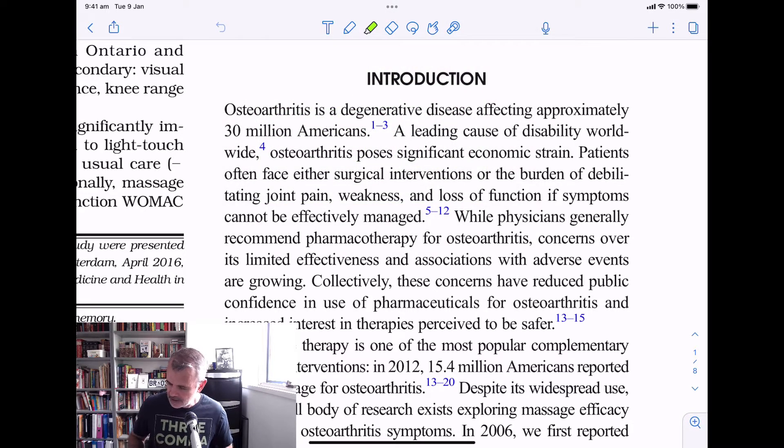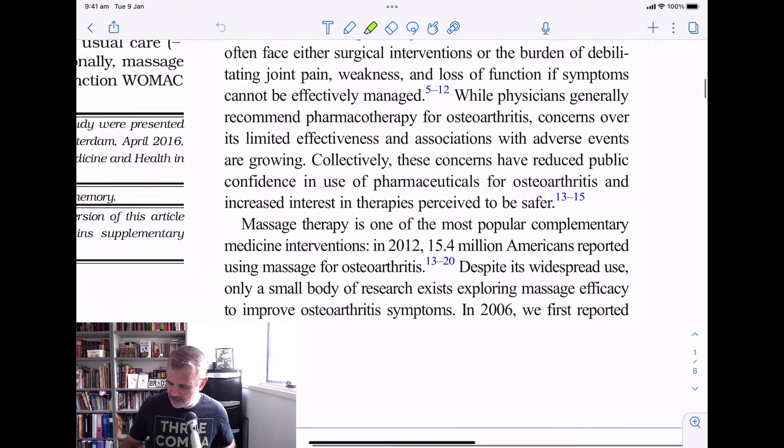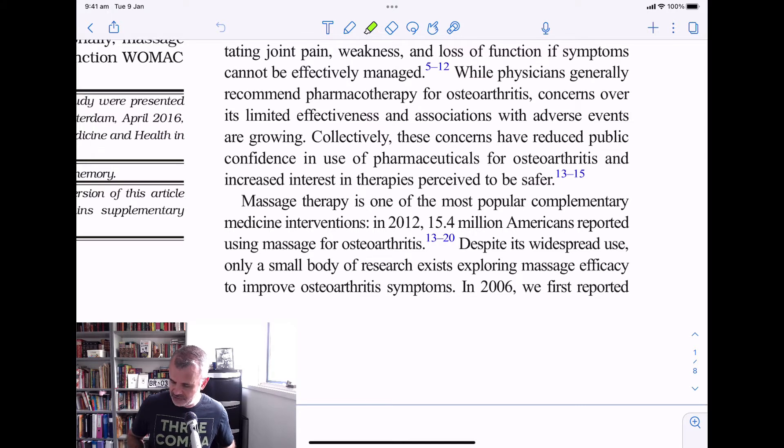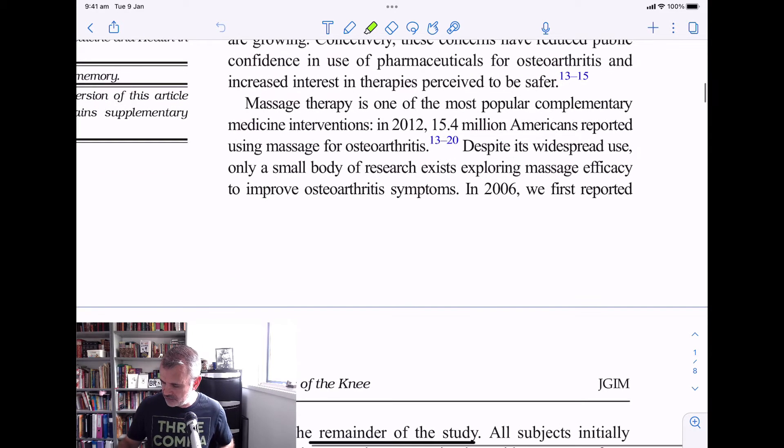Let's skip straight to the introduction and see what we have here. I'll just put my highlighter on, a nice green color. And so, if you don't know what osteoarthritis is, it's a degenerative disease affecting approximately 30 million Americans. So that's about, what is it, probably about 10% of the population. So in Australia that'd be, you're looking at 3 million Australians probably. Leading cause of disability worldwide. Osteoarthritis poses significant economic strain. Patients often face either surgical interventions or the burden of debilitating joint pain, weakness, and loss of function if symptoms cannot be effectively managed. Massage therapy is one of the most popular complementary medicine interventions. In 2012, 15.4 million Americans reported using massage for osteoarthritis.